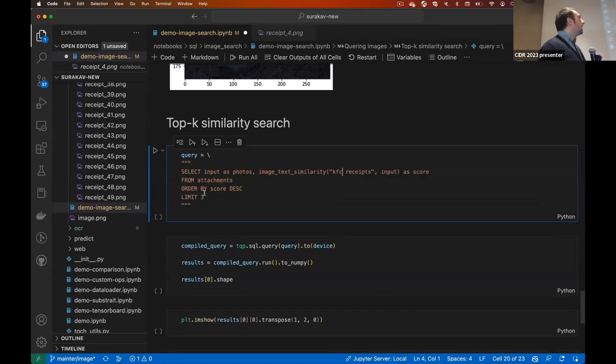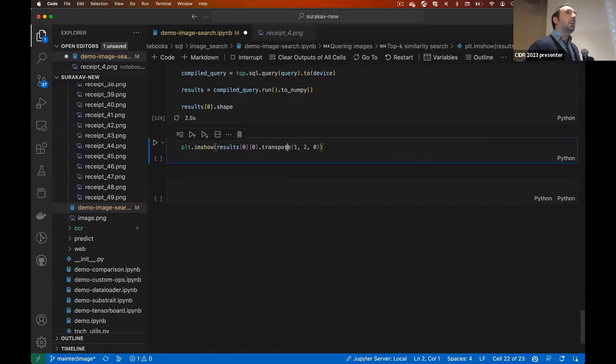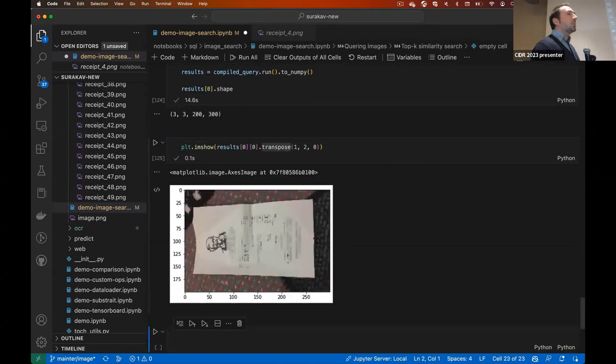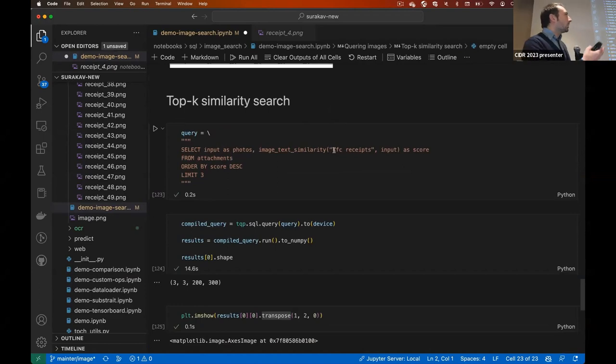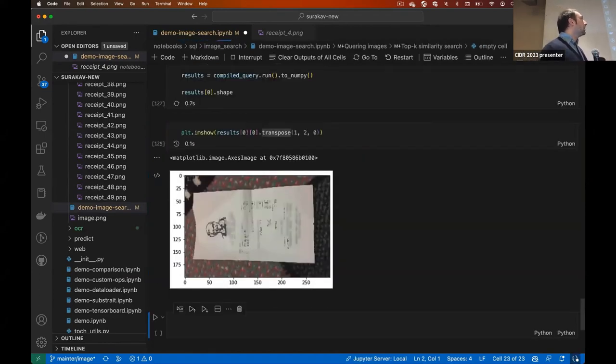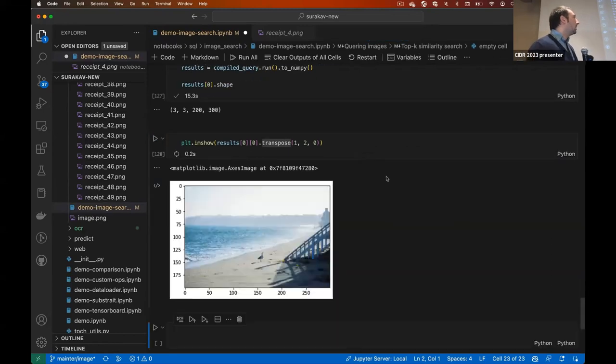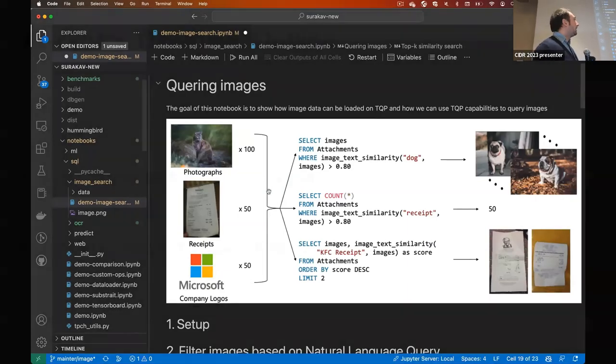For the top key one, we basically try to look for KFC receipt. So it's a limit order by query, in this case. And as you can imagine, we have a KFC receipt in our data set. Of course, you can change whatever, put whatever you want there. So here, I'm going to change the natural text query and try to look for birds on the beach. And of course, we have an image with birds on the beach there. Okay.